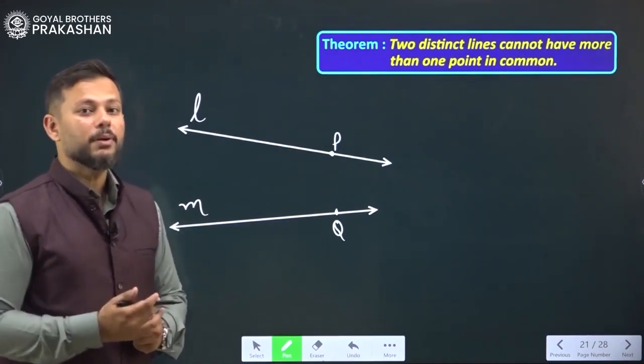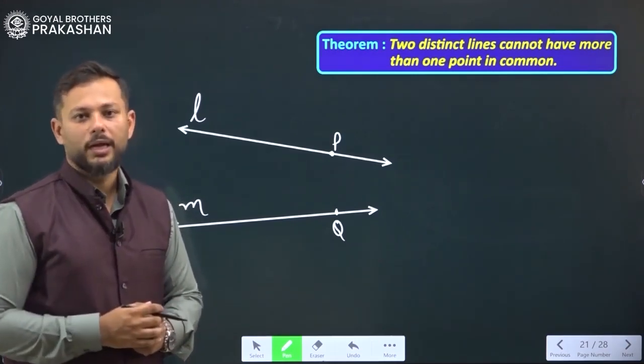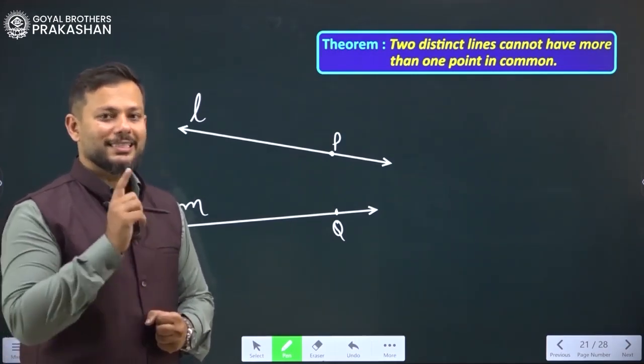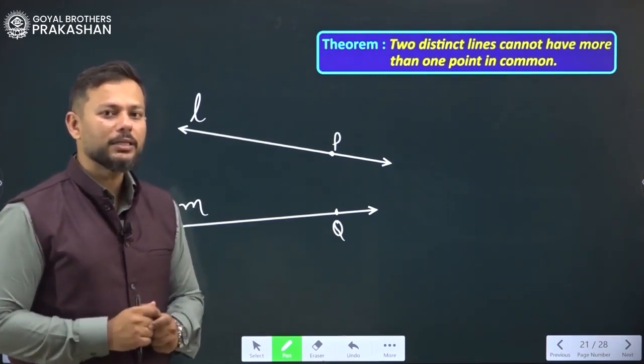Do you remember the axiom we just have derived, axiom 5.1? It states that there can be only a single and unique line passing between two distinct points.